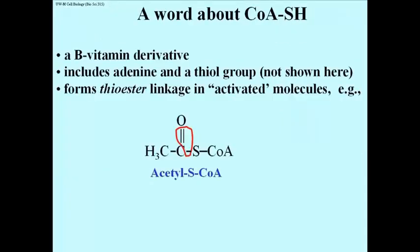A word about coenzyme A, which has a sulfhydryl group — so we often call it coenzyme A-SH or CoA-SH. It's a B-vitamin derivative; in its structure it has an adenine and the SH group, though the full structure is not shown here. In its interaction with pyruvate, pyruvate loses a carbon to become carbon dioxide, and the remaining two carbons of pyruvate are the acetate. The acetate forms a thioester linkage with coenzyme A. Coenzyme A is often referred to as activating the molecules to which it binds, so acetic acid is essentially an activated acetate.